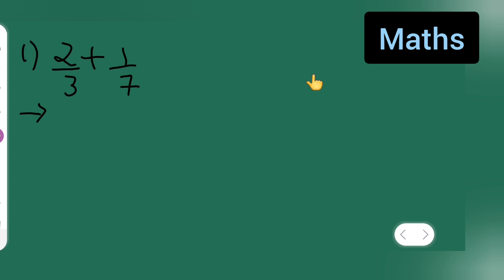So let us start. What is given to you? 2 upon 3 plus 1 upon 7. Here the denominators are different, they are not same. So in this case, what we do - many of them find this difficult.